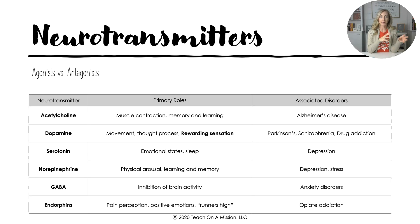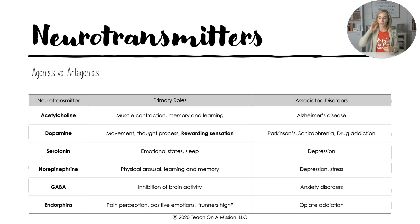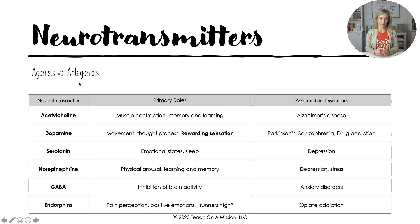For neurotransmitters, first make sure you understand agonists versus antagonists. Both involve external substances from our environment that break through the blood-brain barrier and have an impact at the neural level. Agonists mimic and antagonists block the activity of our naturally existing neurotransmitters. You need to know all of the naturally existing neurotransmitters and how various agonists and antagonists interact at the neurotransmitter level — we'll talk more about that with psychoactive drugs.